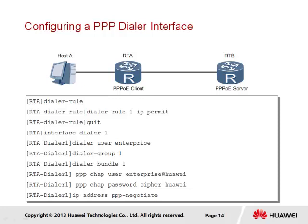A dialer bundle is created to link the dialer interface on which dialing parameters are set, allowing physical interfaces to be dynamically bound to the dialer interface. Authentication is implemented for the dialer interface using CHAP, for which a username and password are defined. The IP address PPP negotiate command is implemented to enable IPCP to obtain the IP address from the remote device, which in this case is RTB.